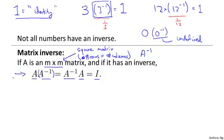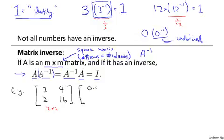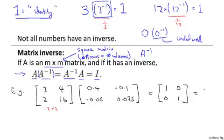Let's look at a concrete example. So let's say I have a matrix [3, 4; 2, 16]. So this is a 2 by 2 matrix, a square matrix, and so this matrix could have an inverse. And it turns out that the inverse of this matrix is [0.4, -0.1; -0.05, 0.075]. And if I take this matrix and multiply these together, it turns out what I get is the 2 by 2 identity matrix I, I_2x2.